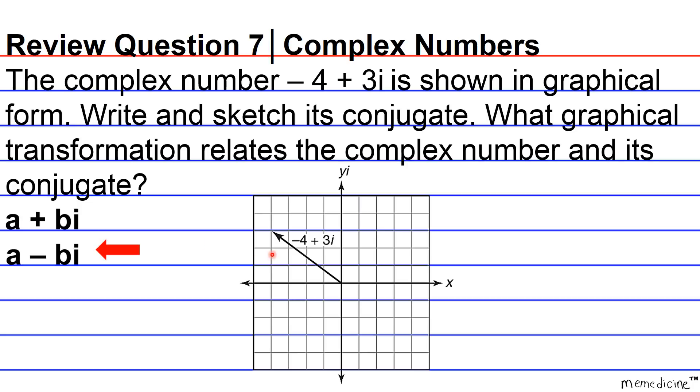So if our a is negative 4 and our b is 3i, its conjugate is obviously going to be negative 4 minus 3i based on the concept that we just discussed.